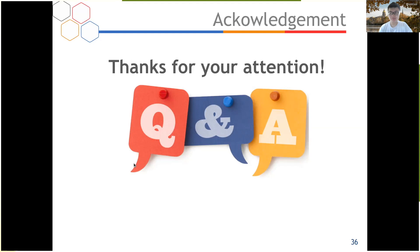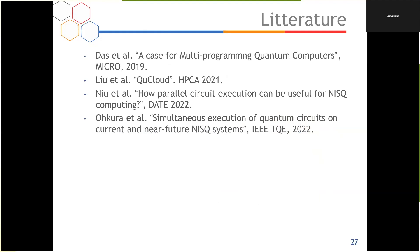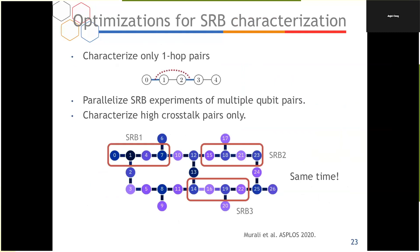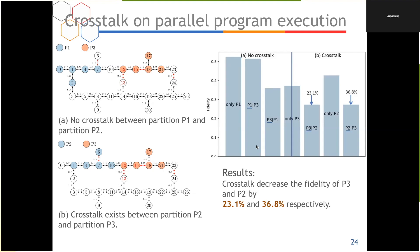Question: You talked about crosstalk between operational gates. What about crosstalk between measurements and gates? If you have multiple programs on the same quantum computer and you measure one qubit, will it affect operations on another qubit? Answer: Yes, there is also measurement crosstalk between qubits, though I didn't consider it here. I guess the crosstalk between gates is more severe, but I'm not sure — I suggest checking the numbers.